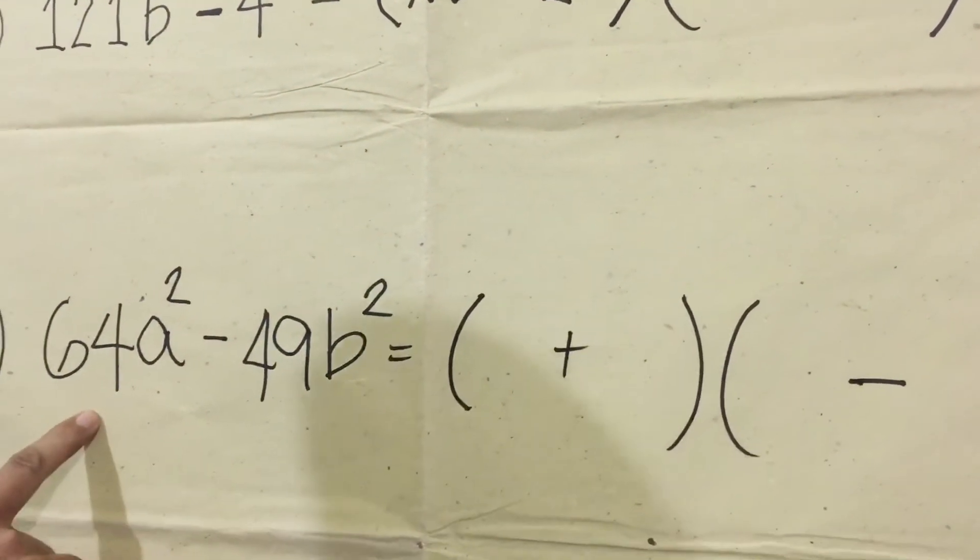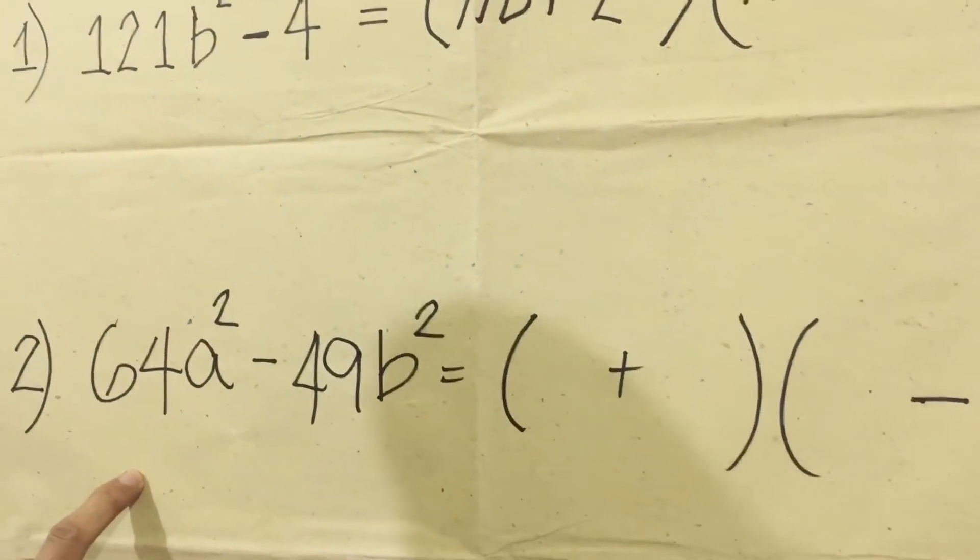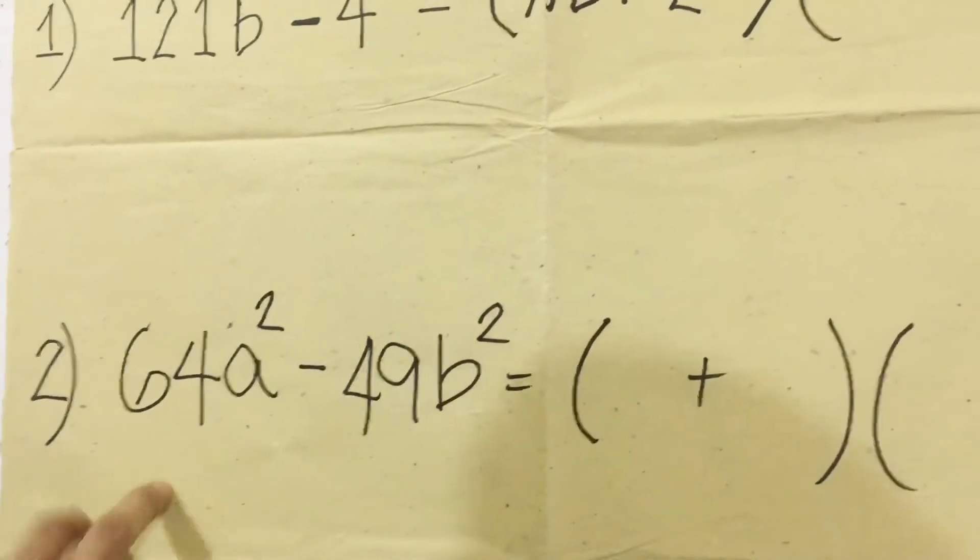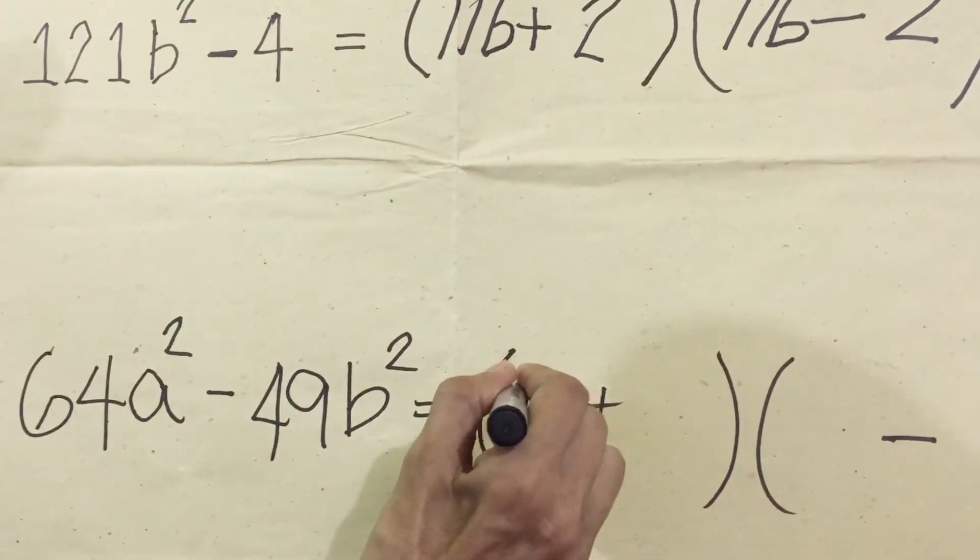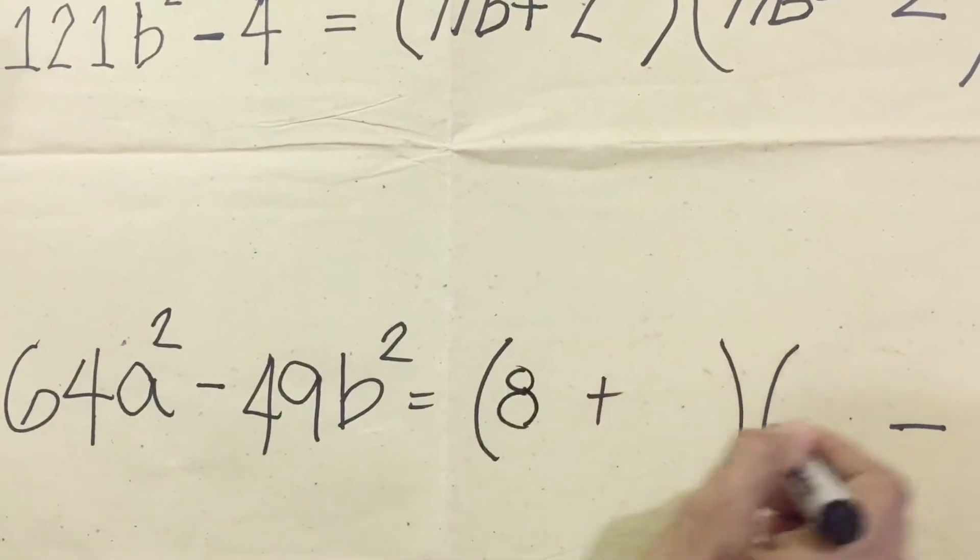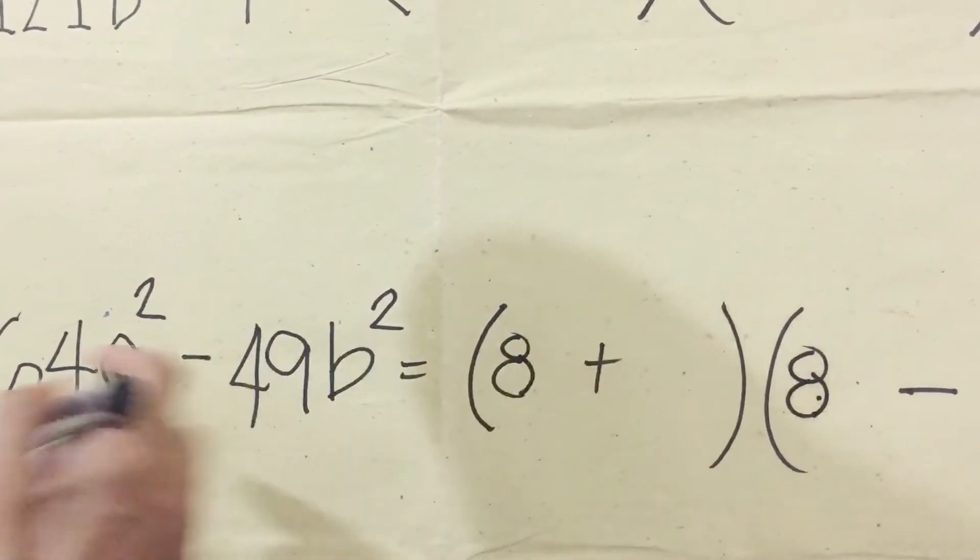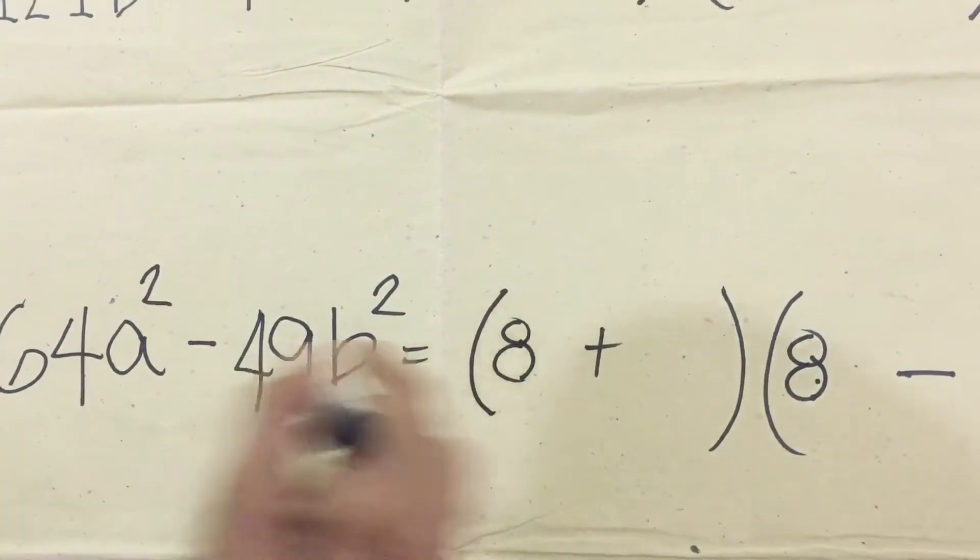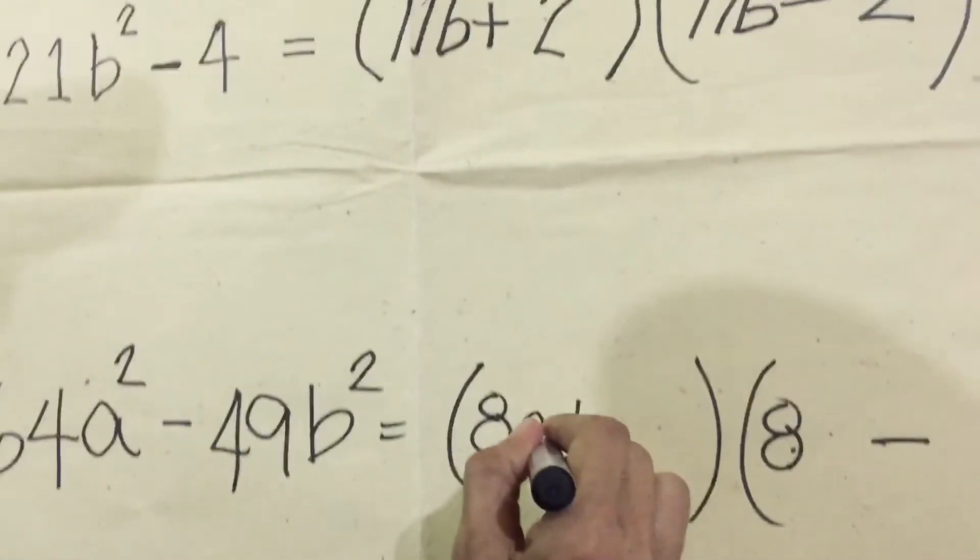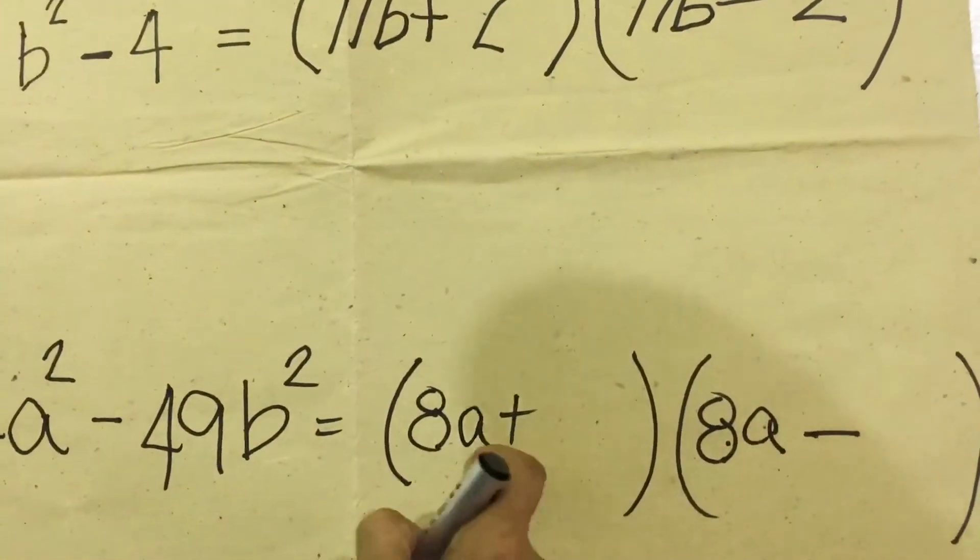Then we're going to find the factor of 64. We will use 8 times 8 equals 64, so our answer here is A and the other one also here is A. To check, 8 times 8 equals 64. And the factor of A-squared is A times A, A and A. Then multiply, A times A equals A-squared.